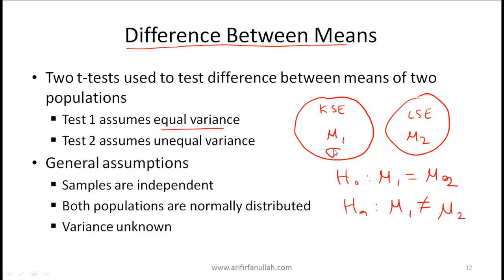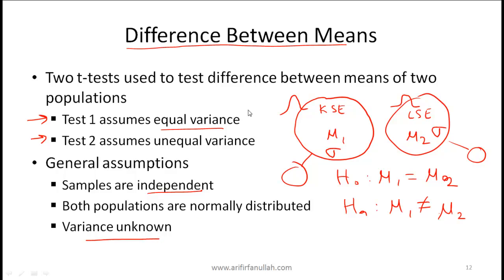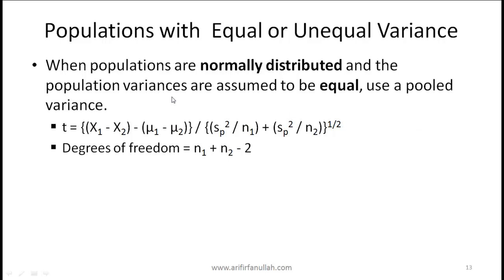There are two possible situations: one where we assume equal variance — that the variance of returns in Karachi equals the variance in Lahore — and another where we assume the variances are not the same. The general assumptions for both tests are that samples drawn from both populations are independent, both populations are normally distributed, and variance is unknown.